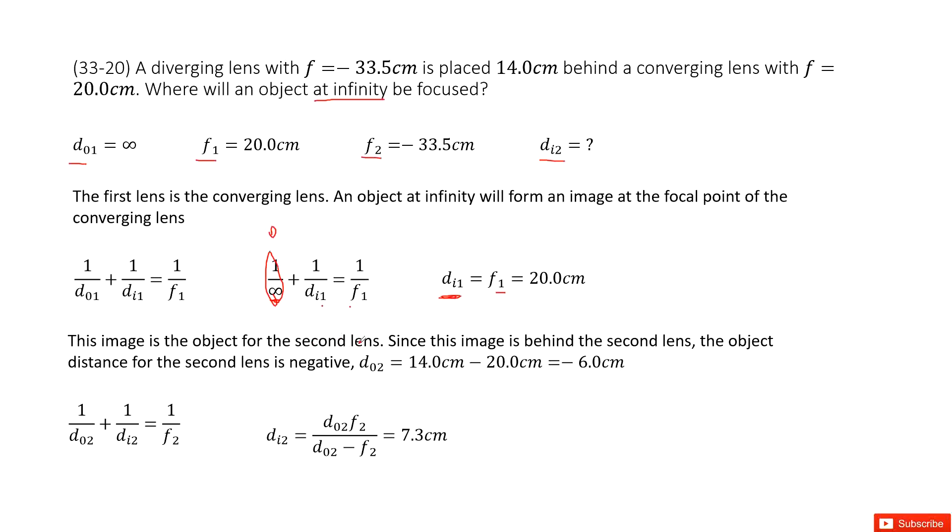We can calculate the object distance for the second lens. We write it as dO2 = 14 cm - 20 cm = -6 cm.